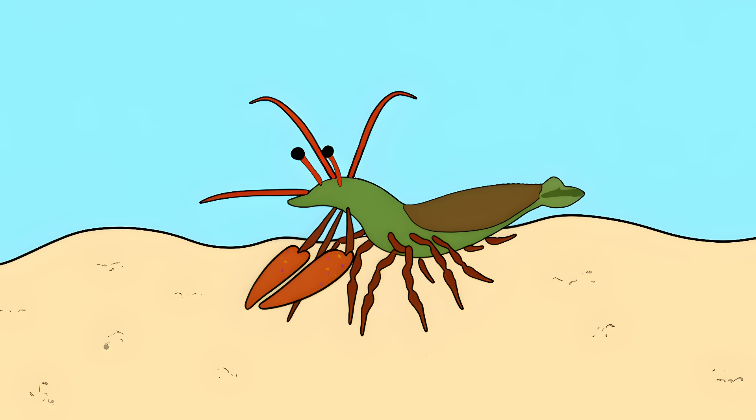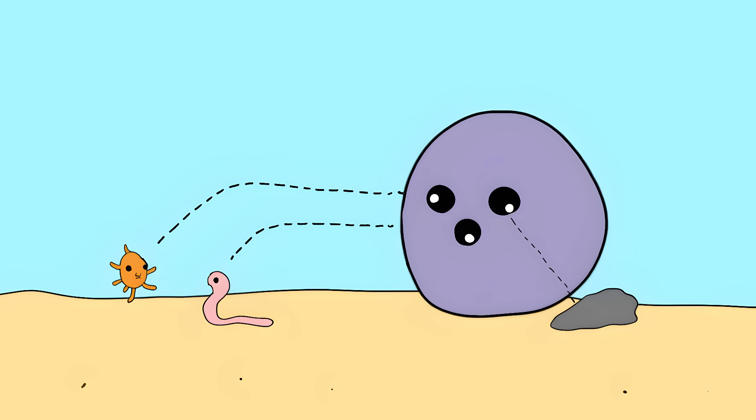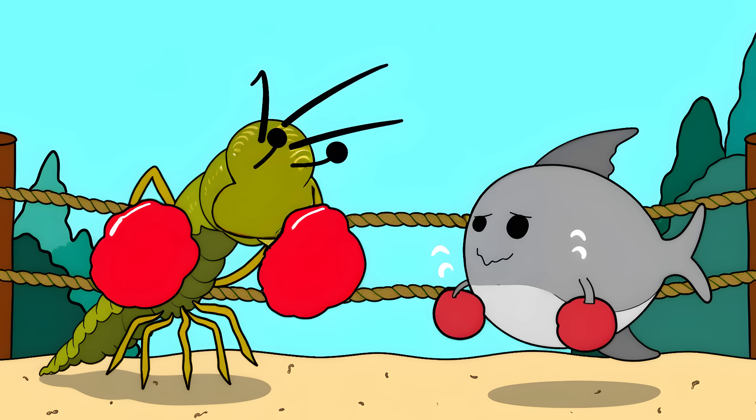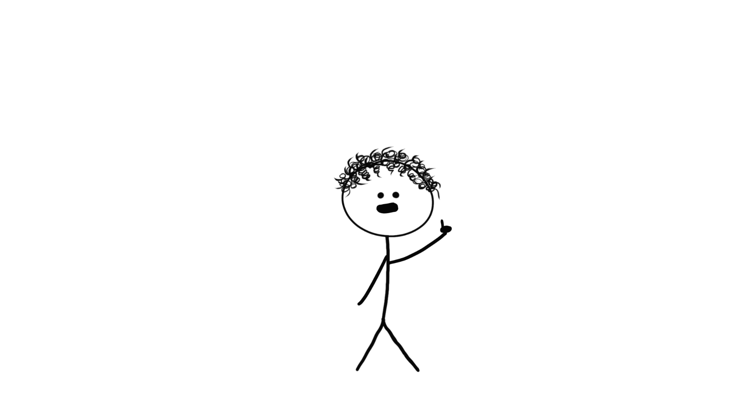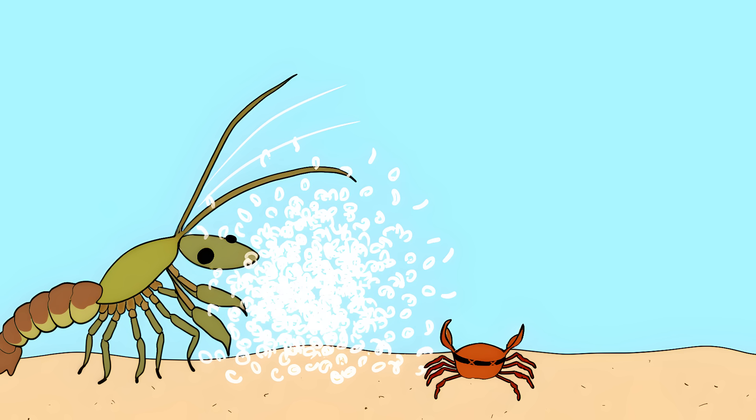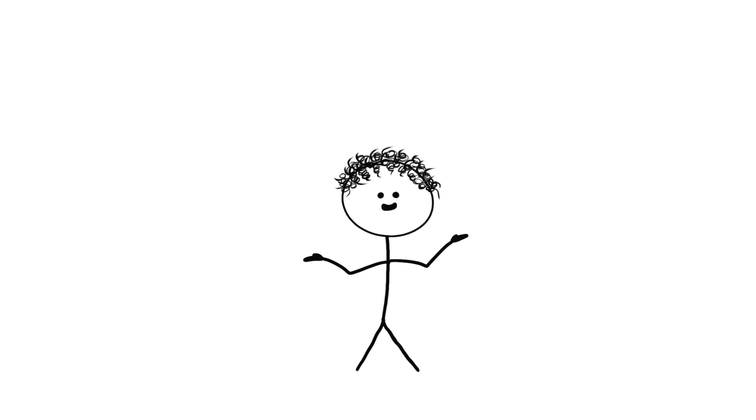Their eyes sit on mobile stalks that can move independently. Each eye has three pupils and can focus on different things at the same time. They need such insane vision because they're the Mike Tyson of the ocean. They punch their prey so fast it literally boils the water around their fist, creating tiny underwater explosions. They need supervision just to aim their nuclear punches.